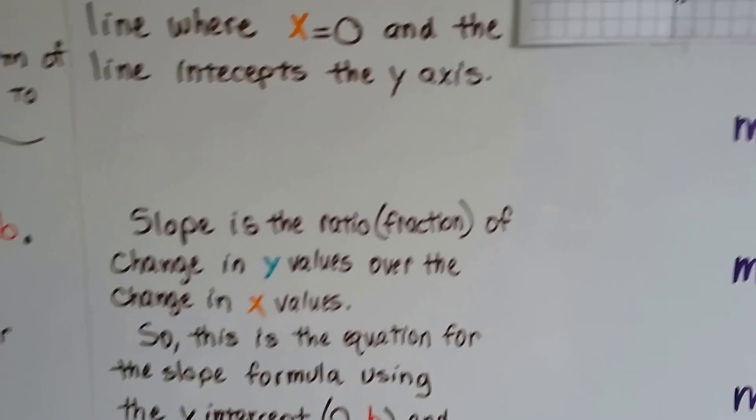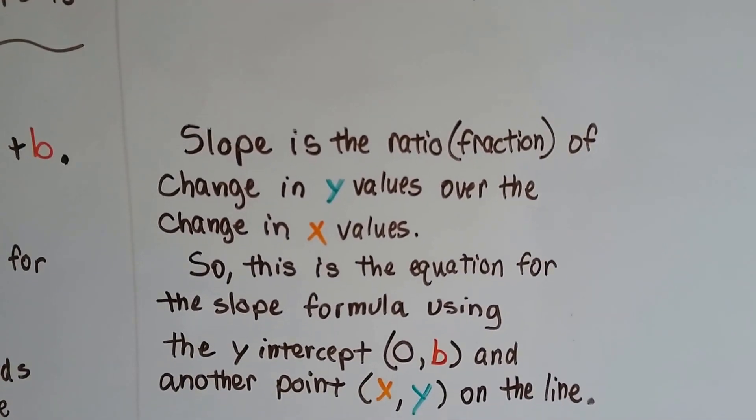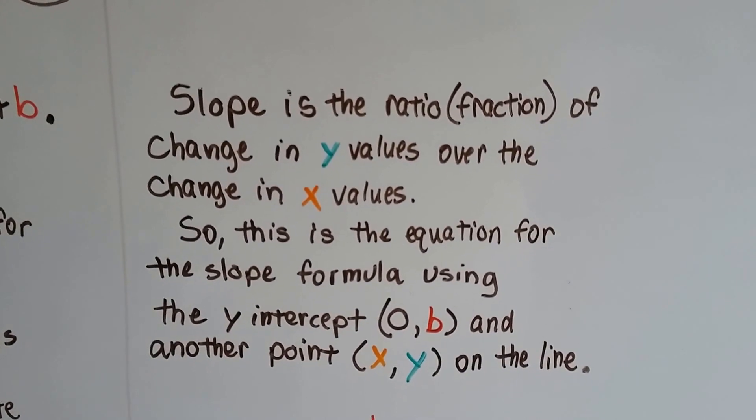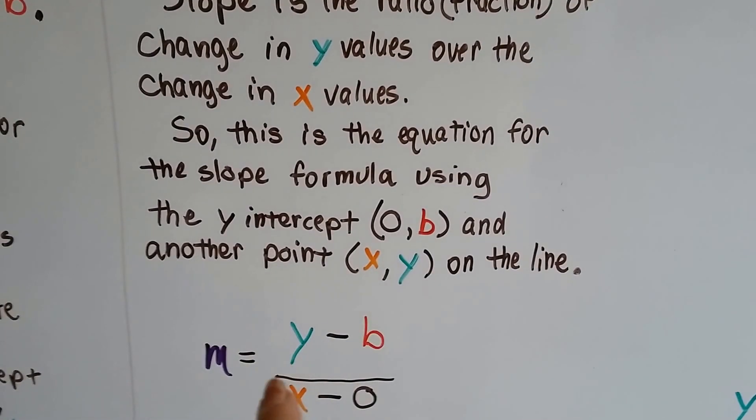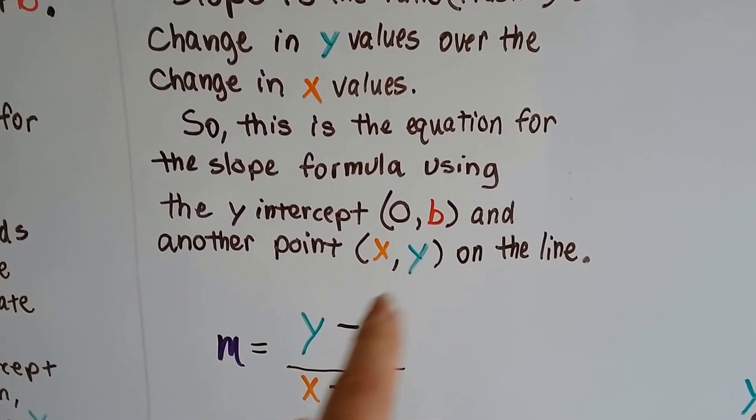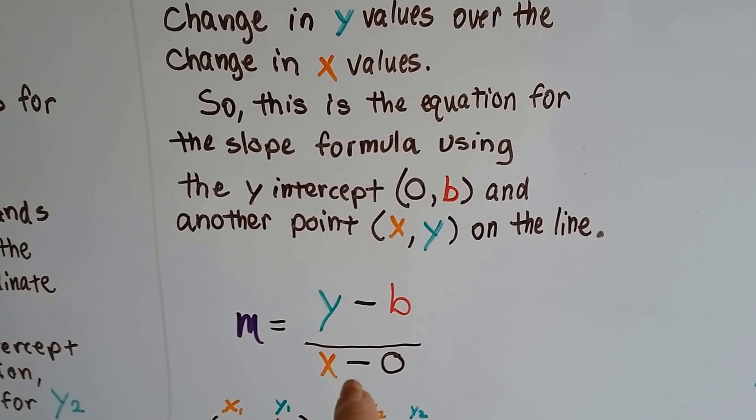And the slope is the ratio. It's the fraction of the change in y values over the change in x values. So this is the equation for the slope formula using the y-intercept, that (0, b), and another point, (x, y), on the line.